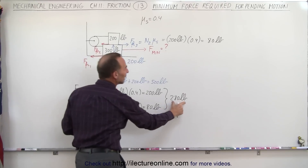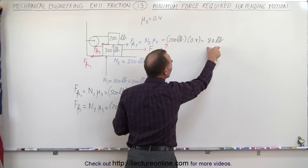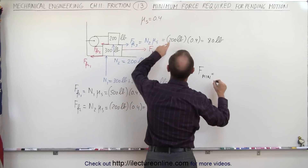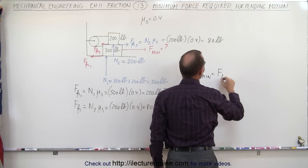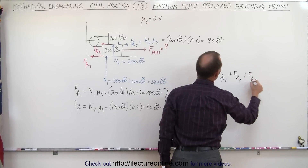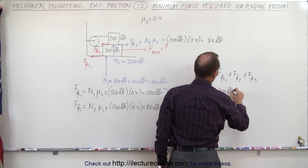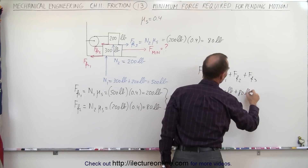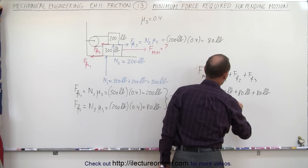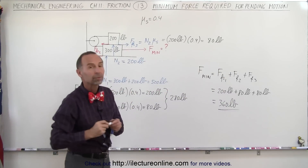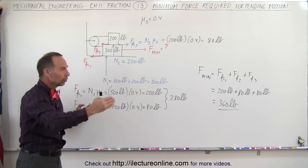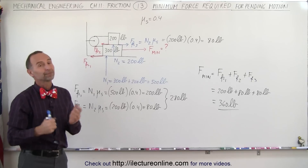We need 280 pounds to move the bottom block and 80 pounds to move the top block, so the minimum force required is the sum of all friction forces: friction force 1 plus friction force 2 plus friction force 3 — that's 200 pounds plus 80 pounds plus 80 pounds, or 360 pounds of force required to get both blocks to move. At that point you'll have impending motion, and any additional force will cause the whole system to begin moving. And that's how it's done.